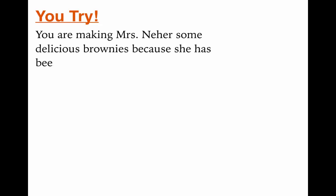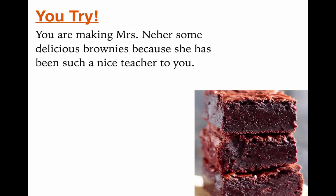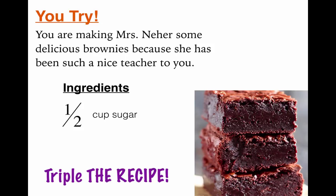Now I want you to try a problem. You are making Mrs. Neera some delicious brownies because she has been such a nice teacher. Here's what you need to know: your ingredients include a half cup of sugar, and you are going to triple the recipe — making triple the brownies. Your job is to figure out: if you triple the recipe, how much sugar would you actually need? Pause the video and take your time trying to figure this out.